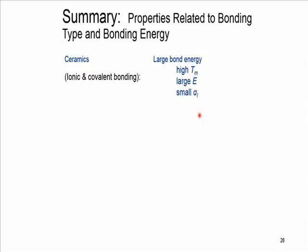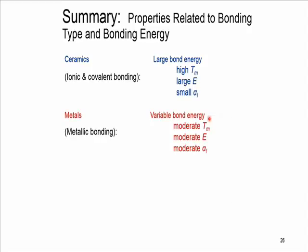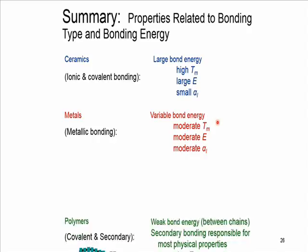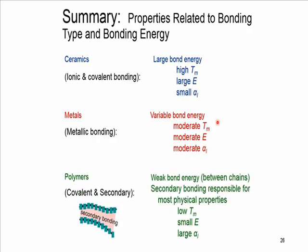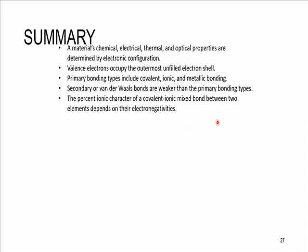In summary, based on what we just discussed about the relation between bond type and bond energy and properties, we can generally say that ceramics have high melting temperature and a large value of energy and a smaller value of thermal expansion. For metals, it is in the moderate level, and for polymers, of course, these are very small. Thank you very much, and we can make a summary of what we went through in this lecture as you can see in this slide.